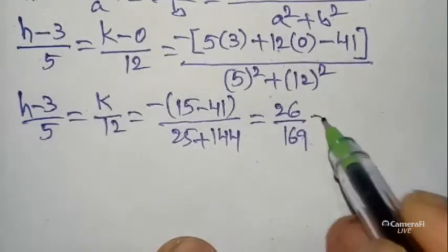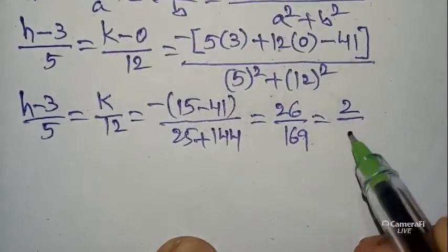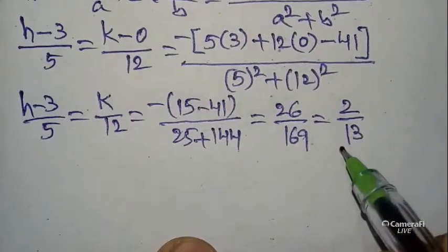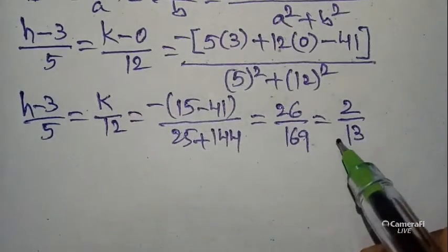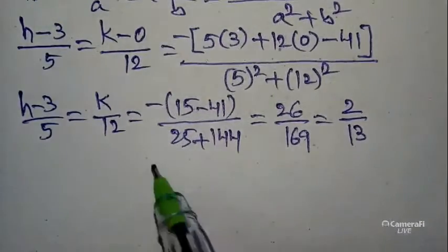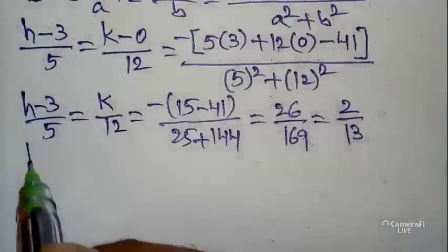These two values are related: 26/169 simplifies. From the 13 times table, 13×2 = 26 and 13×13 = 169, so 26/169 = 2/13. We equate: (h − 3)/5 = 2/13.